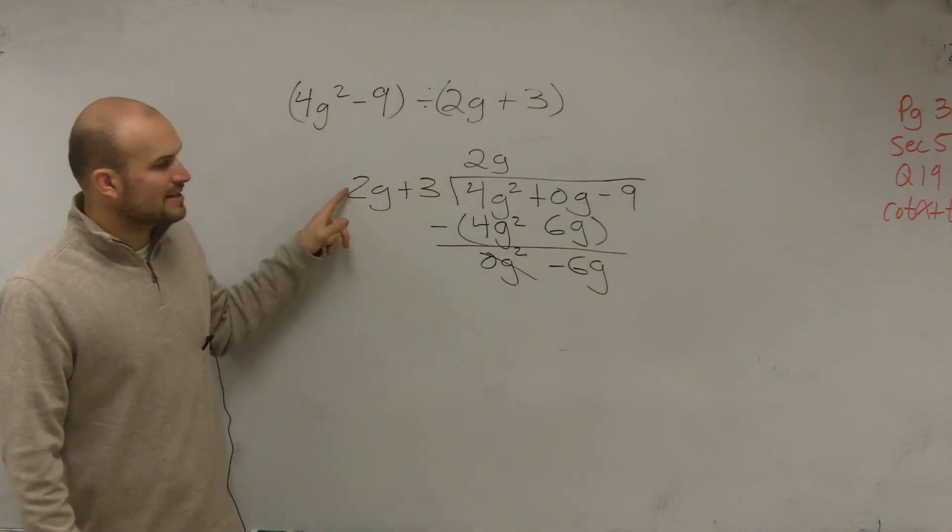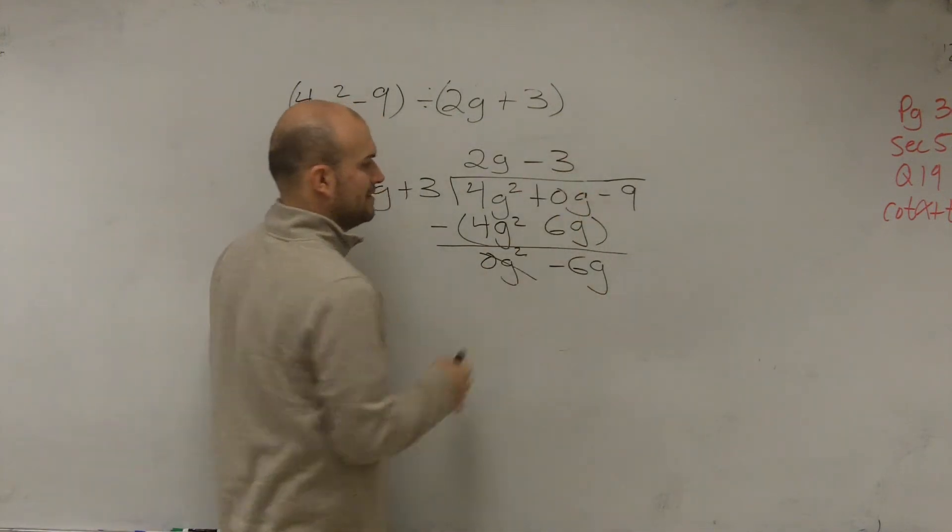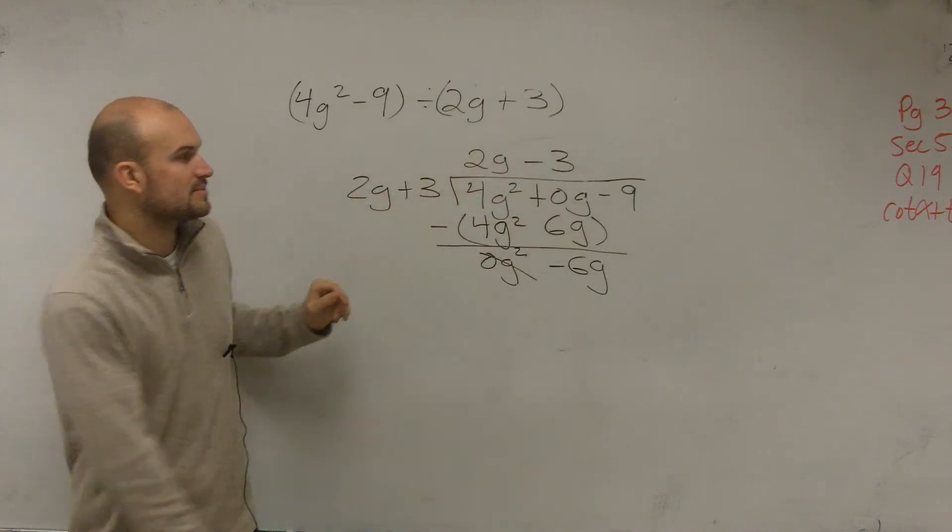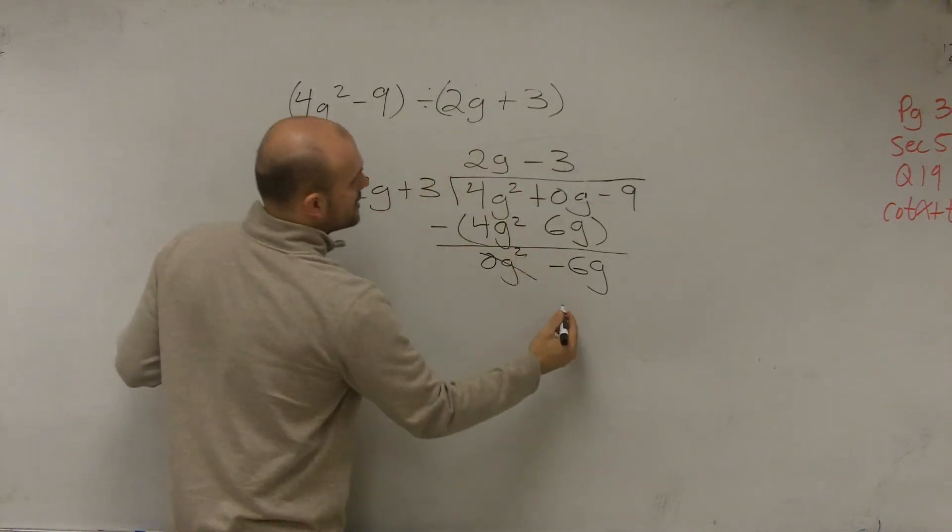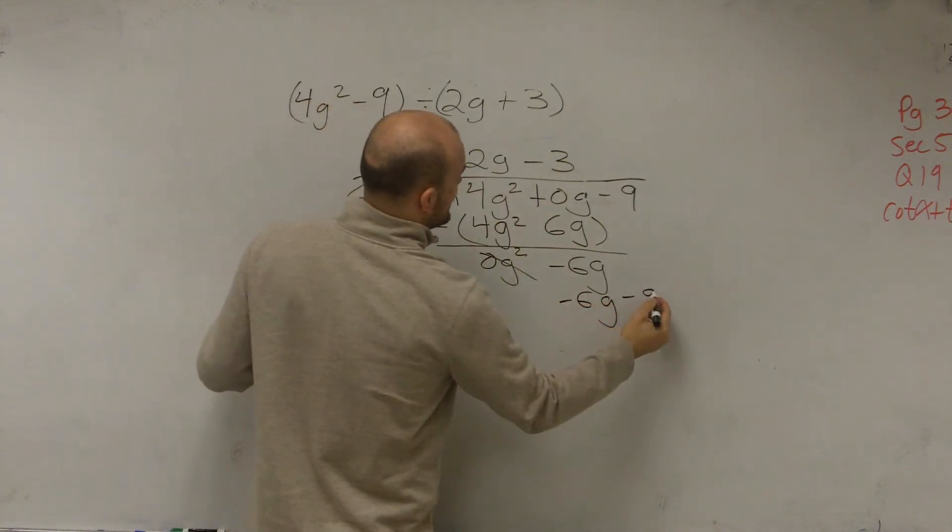Then we say how many times is 2g divided into a negative 6g? And that goes in there negative 3 times. Now you multiply the negative 3 times both terms. Negative 3 times 2g is a negative 6g. Negative 3 times positive 3 is a negative 9.